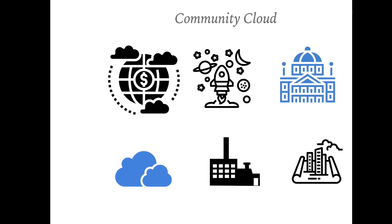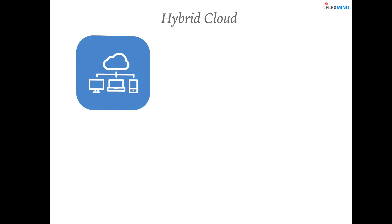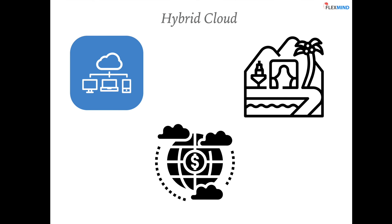The last deployment type is hybrid cloud. Hybrid cloud is a combination of two or more of the above-mentioned cloud deployment types, chosen based on business requirements to get the best out of each. Most enterprises use a combination of these for their projects.